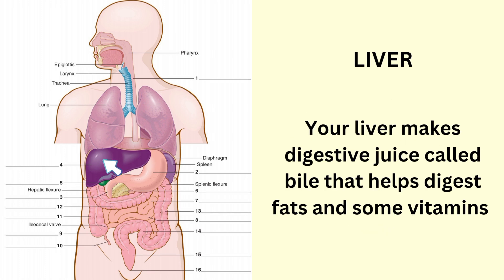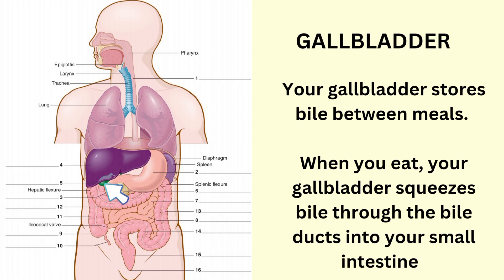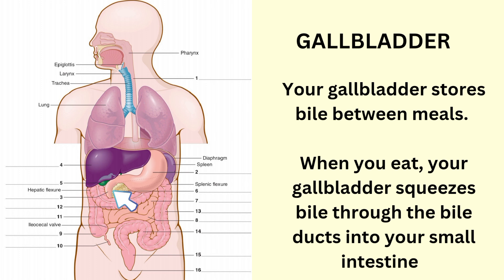Liver. Your liver makes digestive juice called bile that helps digest fats and some vitamins. Gallbladder. Your gallbladder stores bile between meals. When you eat, your gallbladder squeezes bile through the bile ducts into your small intestines.